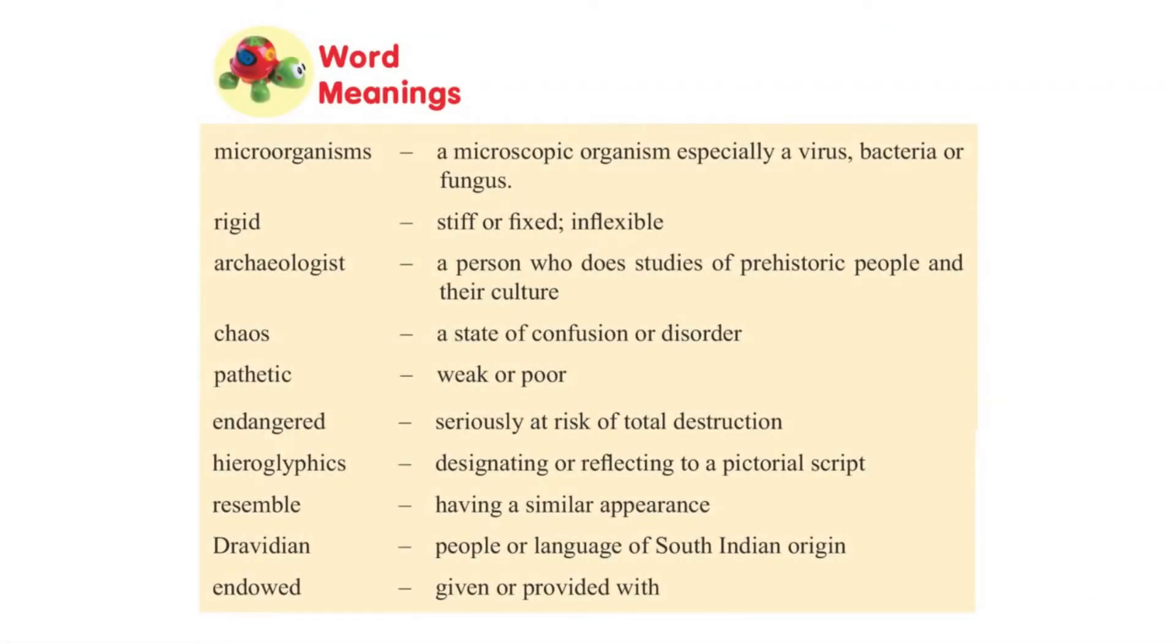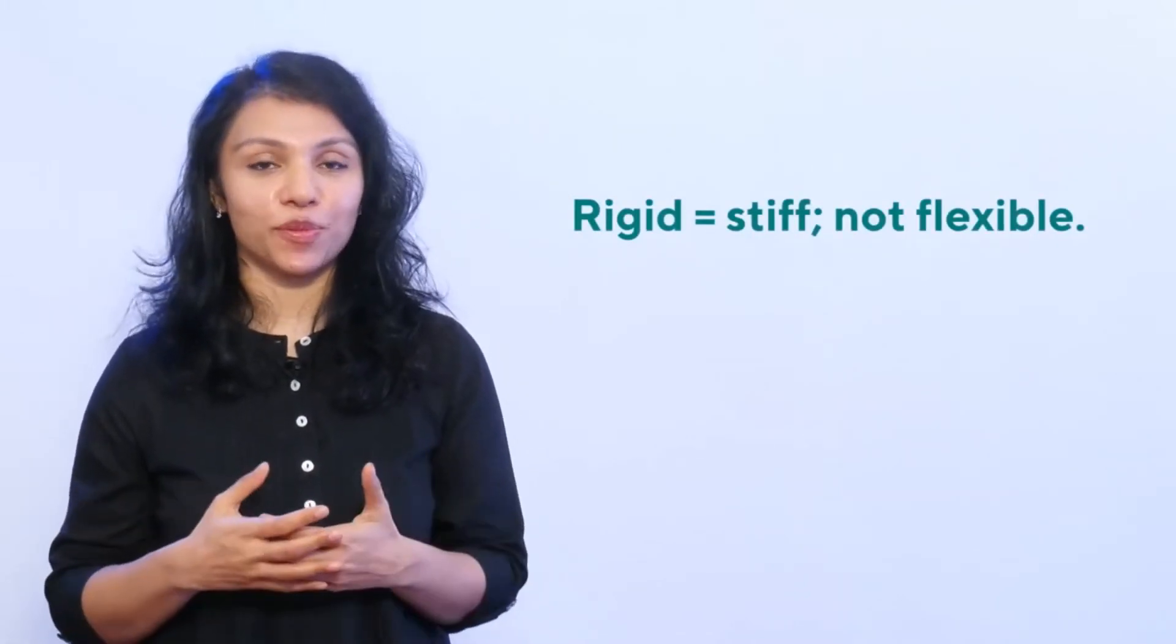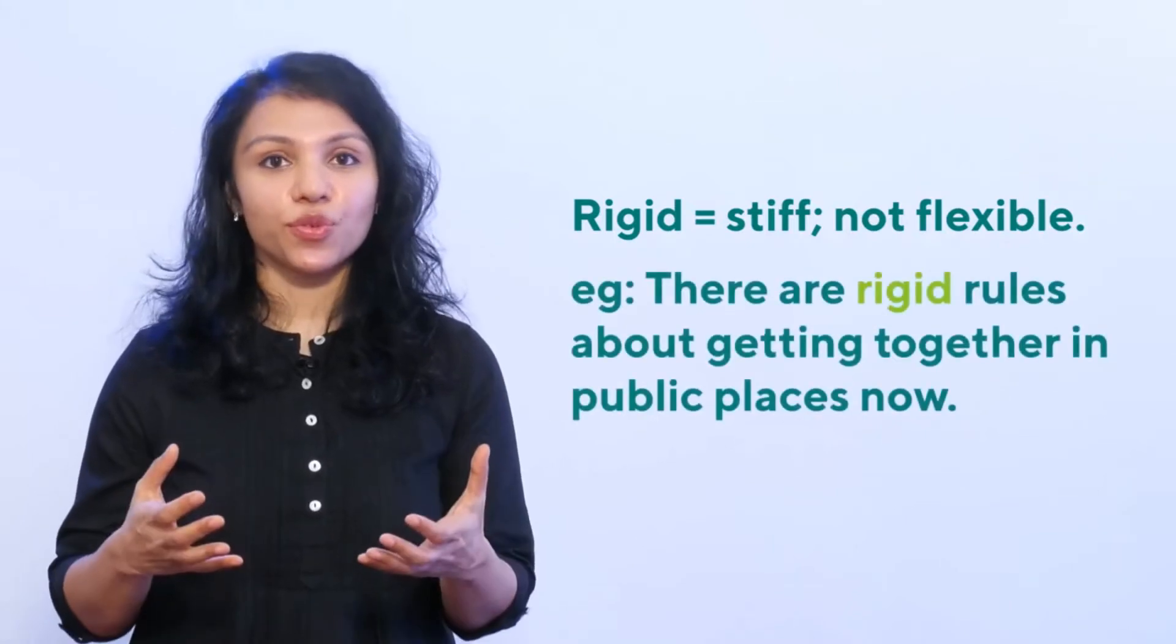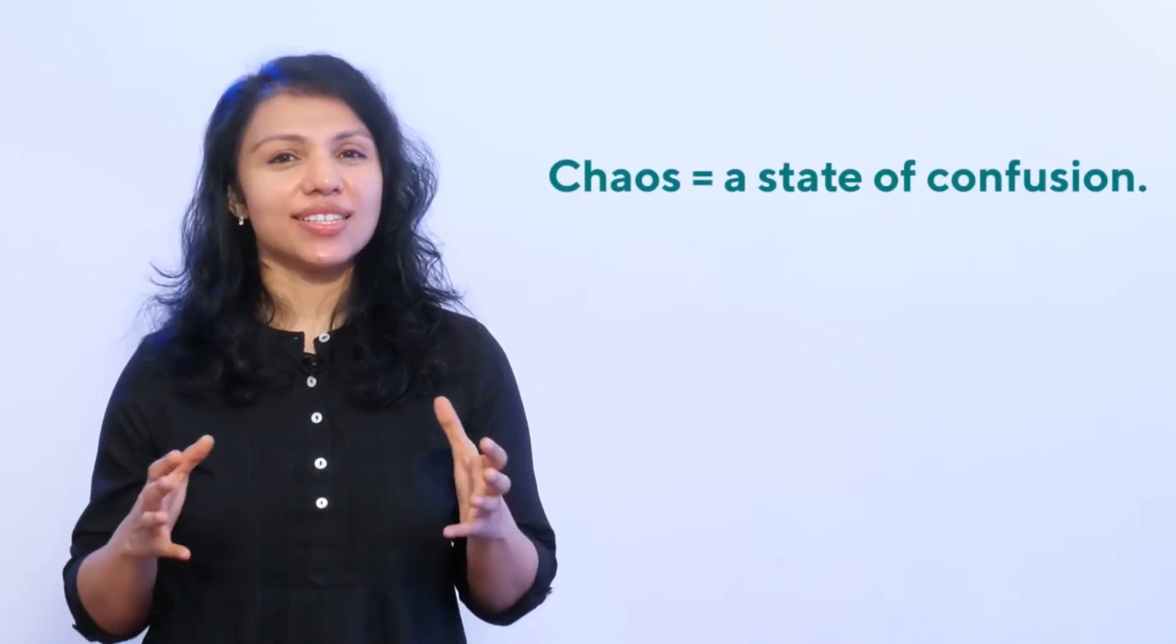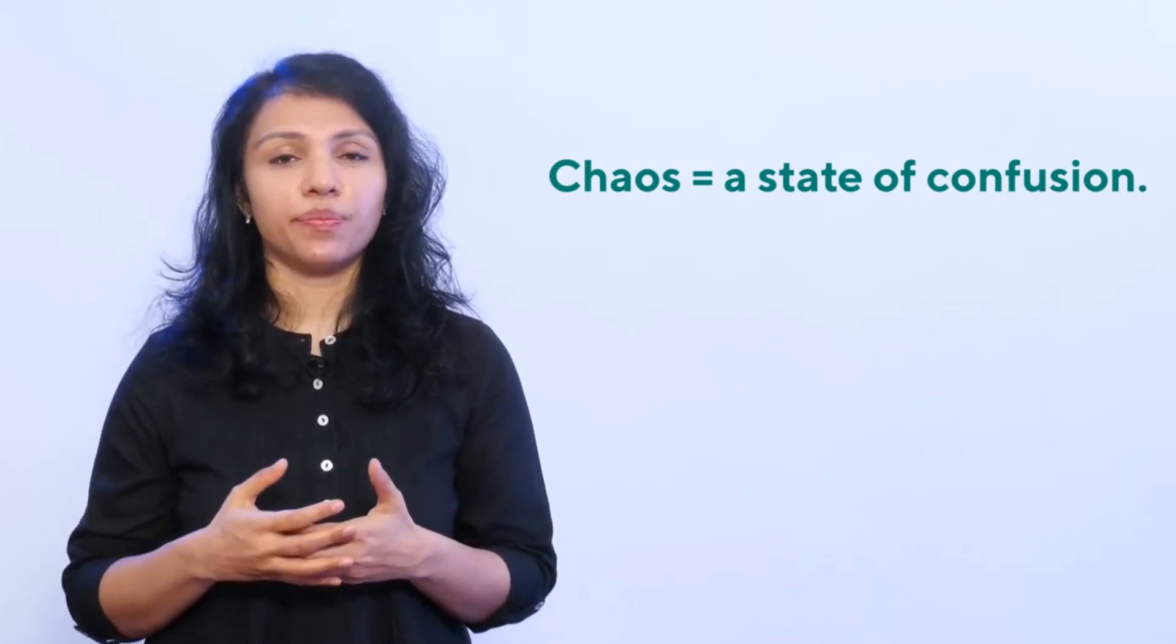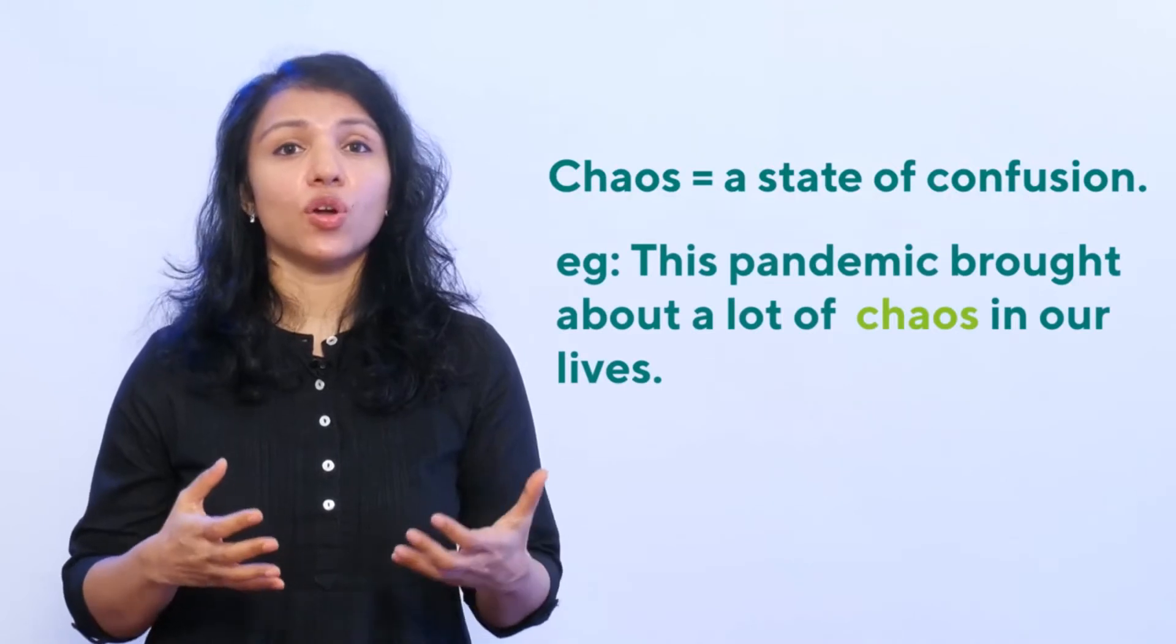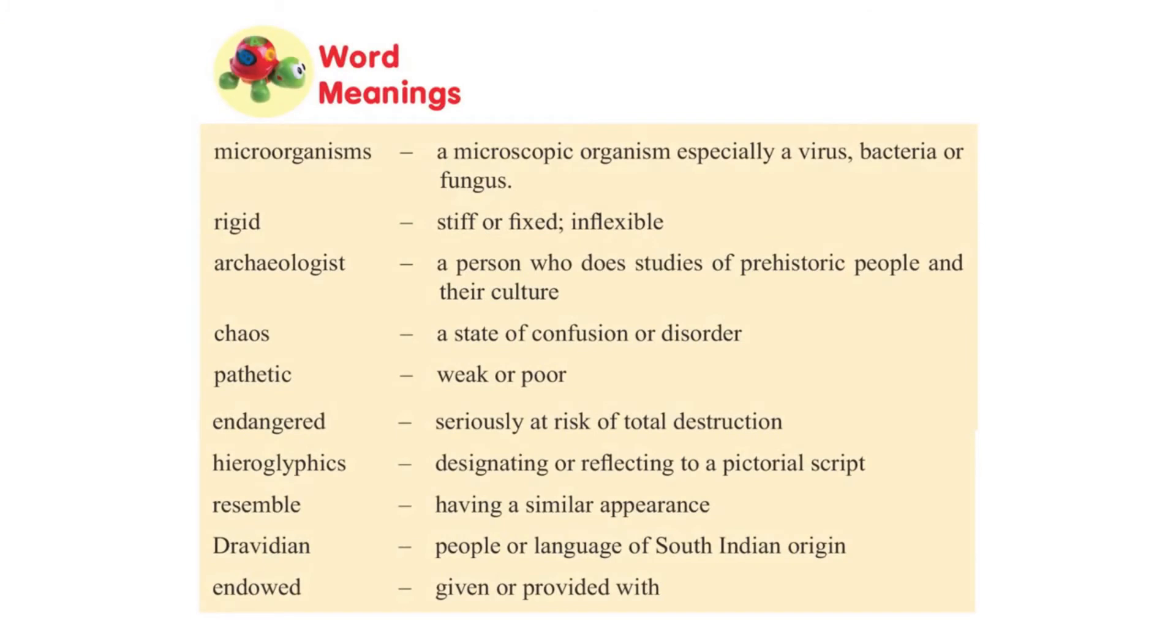I hope you've read the passage. Now let's go into the vocabulary section. There are words and their meanings given at the end of the passage. I will take you through two of them. One: rigid. Rigid means stiff, not flexible. Let's use that in a sentence. There are rigid rules about getting together in public places now. The second one: chaos. A state of confusion. You could say this pandemic brought about a lot of chaos in our lives. There are more words given there. Please look through them, understand their meanings and use them in your own sentences.